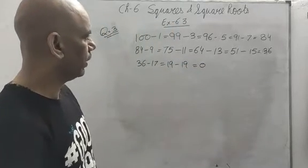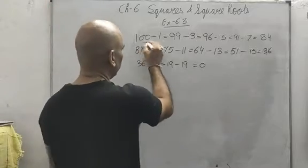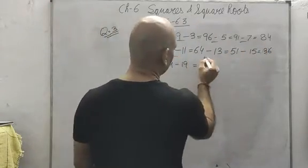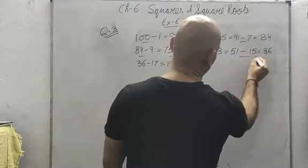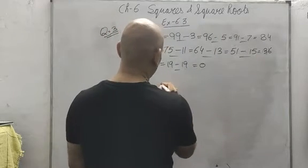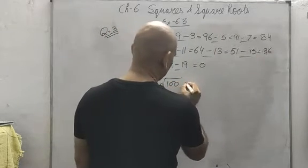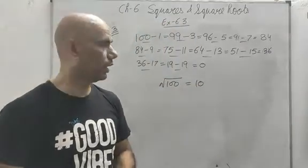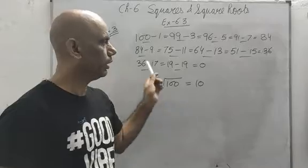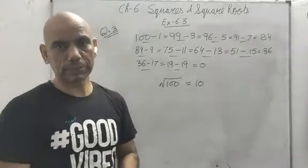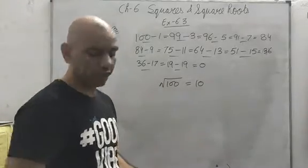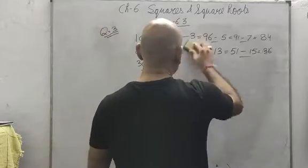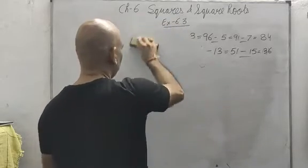We have reached 0. Count how many times we subtracted: 1, 2, 3, 4, 5, 6, 7, 8, 9, 10. Hence 100 is the square of 10 and the square root of 100 is 10. This is the repeated subtraction method. You people will now do 169.